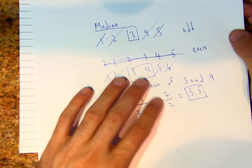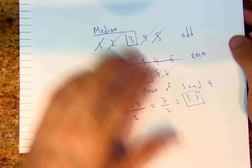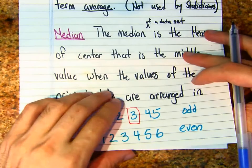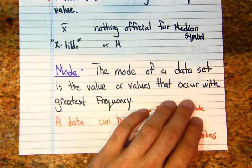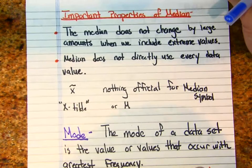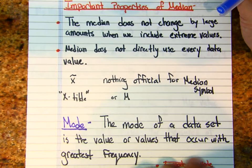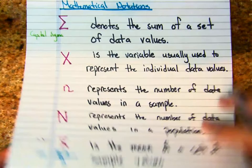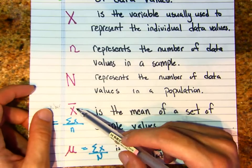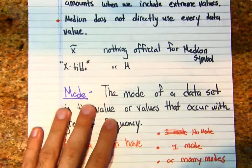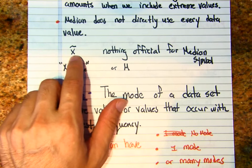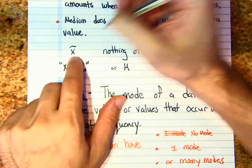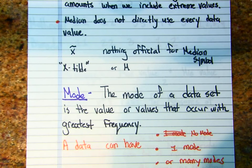If you need to pause and rewind, go for it, and remember if you have any questions put them in the comment section. The median is pretty straightforward. Important properties of the median — have this in your notes. For mean we have symbols x-bar and mu. For median, the symbol some people use is x-tilde; x-tilde will denote the median.